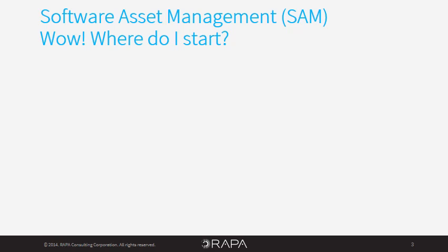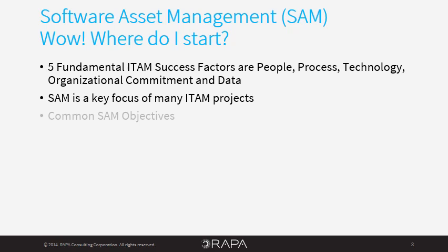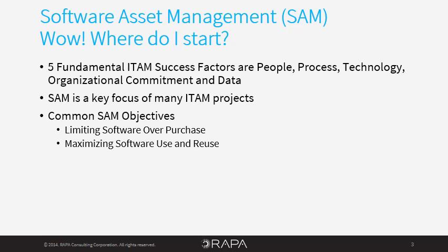As we have seen in previous videos, the five fundamental ITAM success factors are people, process, technology, organizational commitment, and data. These success factors are incorporated into RAPA's maturity model and will help you determine how your organization measures up to industry best practice. Software asset management is often the main focus of ITAM projects. Limiting software over-purchase, maximizing software use and reuse, and minimizing penalties associated to software non-compliance are at the top of the list of ITAM project objectives.